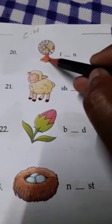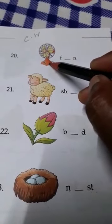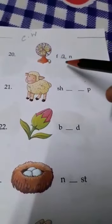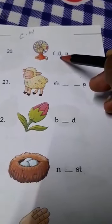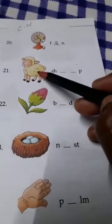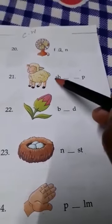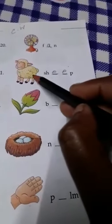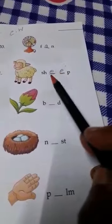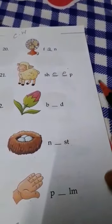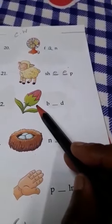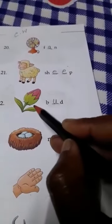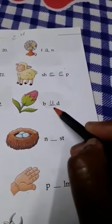So, what is this? This is a fan. So, in the blank, which vowel will come? A will come. Now, this one. Sheep. S-H-E-E-P. Sheep. Here, these two E are vowels. This is bud. B-U-D, bud. So, here, U is a vowel.